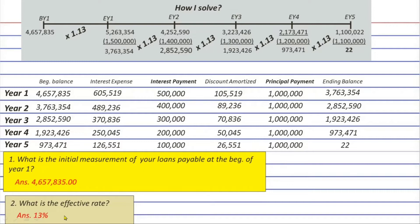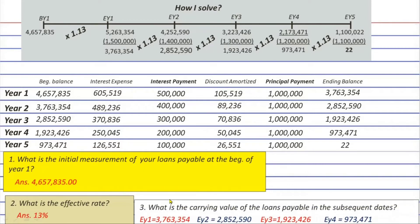Now let's look at possible question number three: what is the carrying value of the loans payable at different dates? In this problem we need the carrying value at the end of years one through four. Using the timeline gave us those answers in previous episodes. With the amortization table, those values are directly available in the last column. That's it for possible question number three.